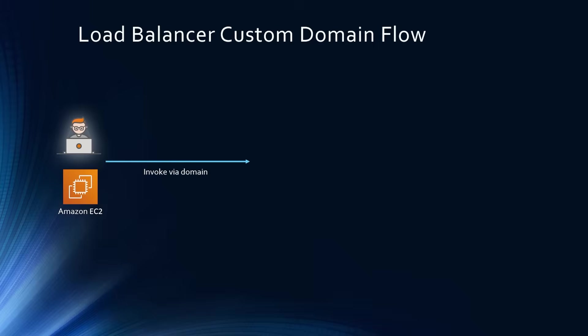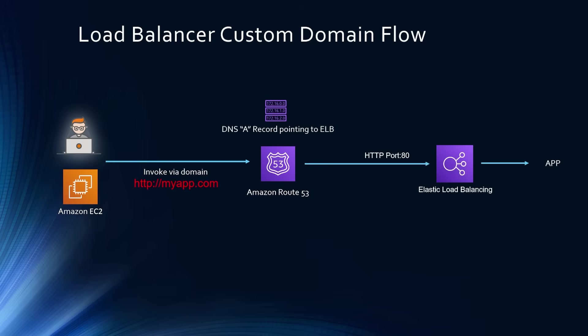Extending one step further: you want to invoke your application using a custom domain name, such as your website name, instead of the default load balancer URL. In that case, you need a DNS resolver in between. Amazon Route 53 is the service for AWS, where you can register your domain and invoke the app using something like myapp.com. In Route 53, you will have a DNS A record pointing to the load balancer, which accepts traffic on HTTP port 80 and redirects it to the backend application.